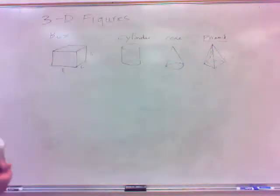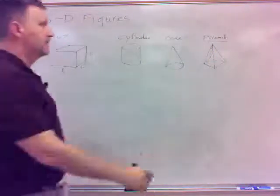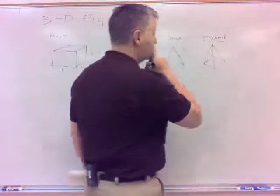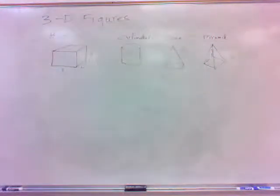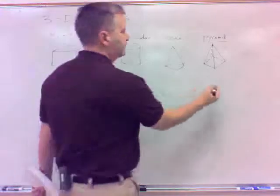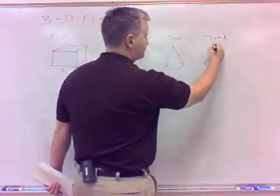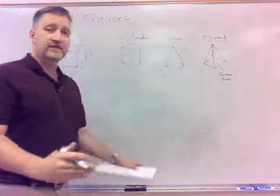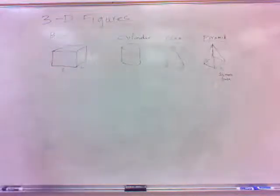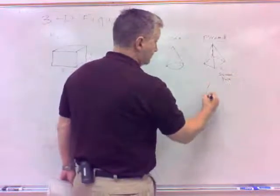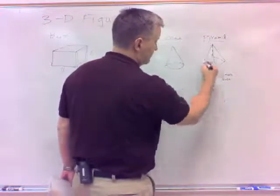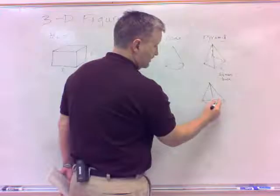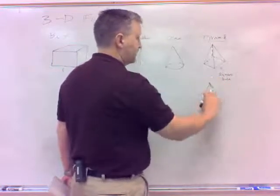The thing about pyramids is the base can change. You always have triangles for the sides, but in the Great Pyramids example we have a square base. However, any polygon can be the base of a pyramid. You could have a triangular base, where instead of a square, the base is just a triangle — so you'd just have three sides around it instead of four.